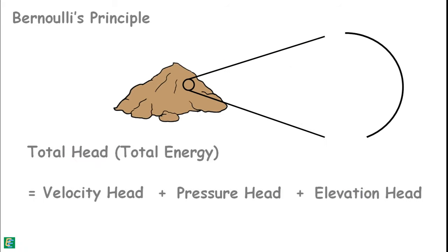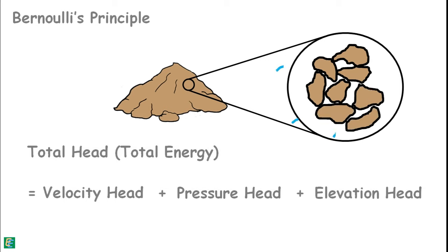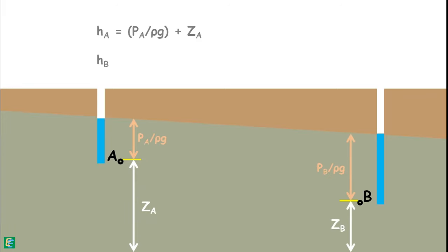When water flows through the soils, its velocity is very small, therefore we neglect the velocity head. Water flows from high energy region to lower energy region. If the hydraulic head of point A is higher than the head of B, water may flow from point A to B.